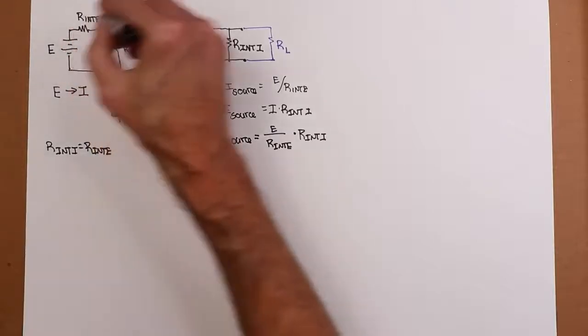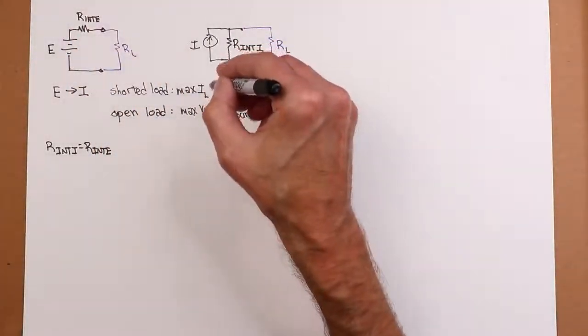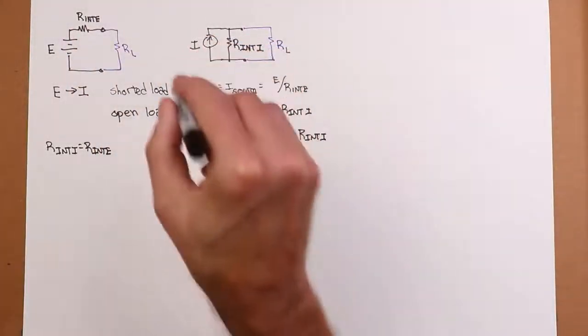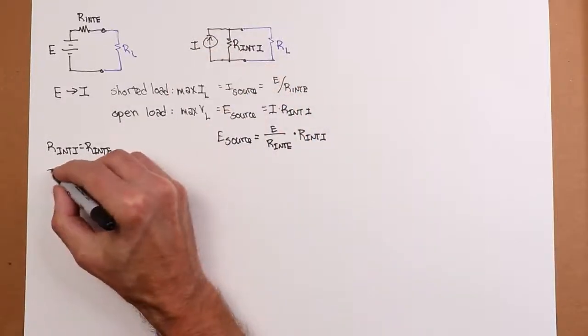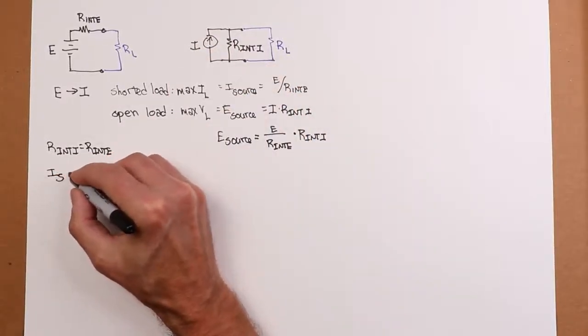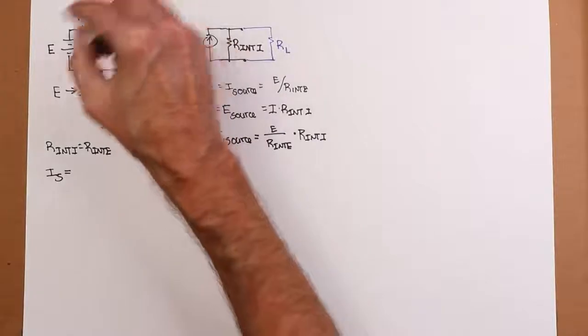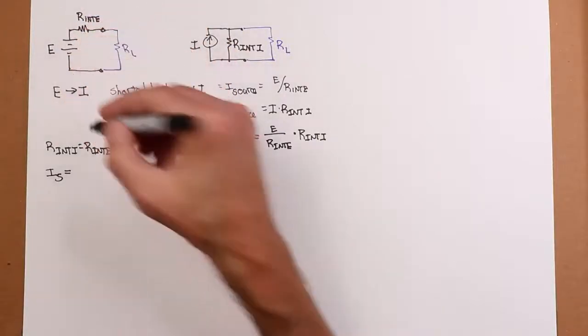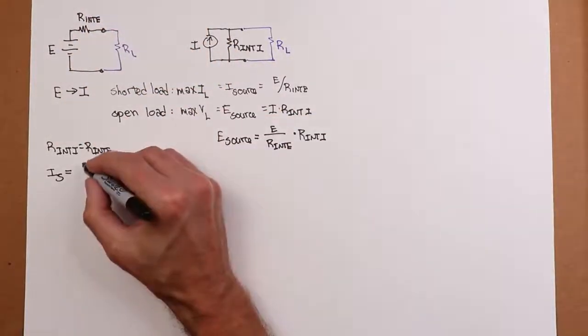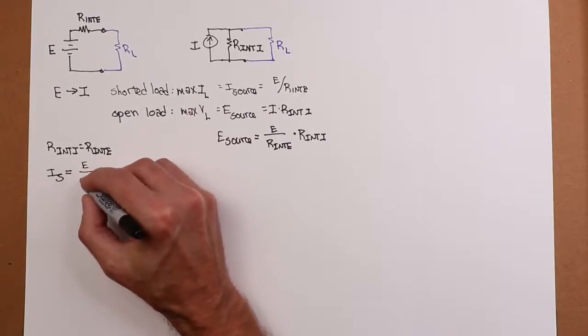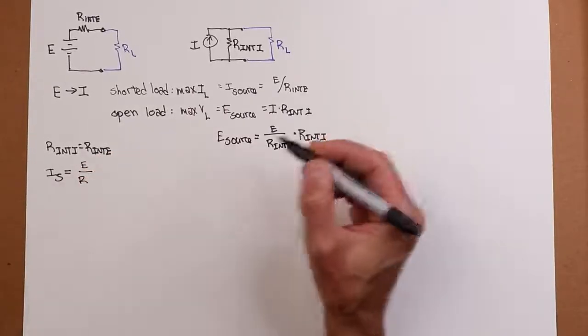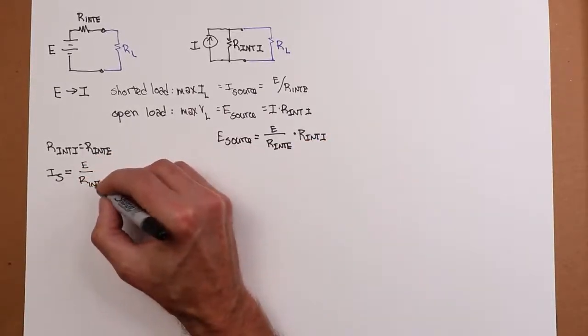And then the value for the source, the current source, is simply the maximizing current back here for the voltage source. In other words, this is the short circuit current. So that's E divided by R internal now because I know the two things are the same size.